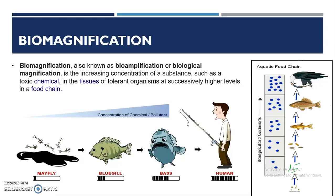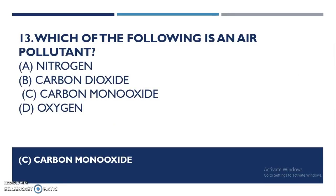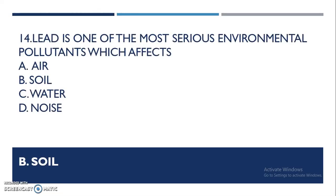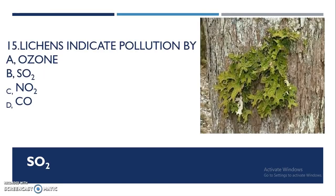Which of the following is an air pollutant — nitrogen, carbon dioxide, or oxygen? These are usual components of air, so the answer is carbon monoxide, which is an air pollutant. Lead is one of the most serious environmental pollutants and its effect is on the soil. Lichens indicate pollution by sulfur dioxide — they are biological indicators.